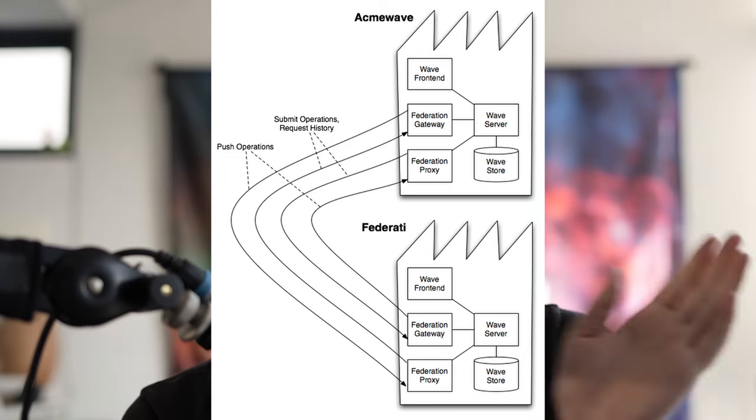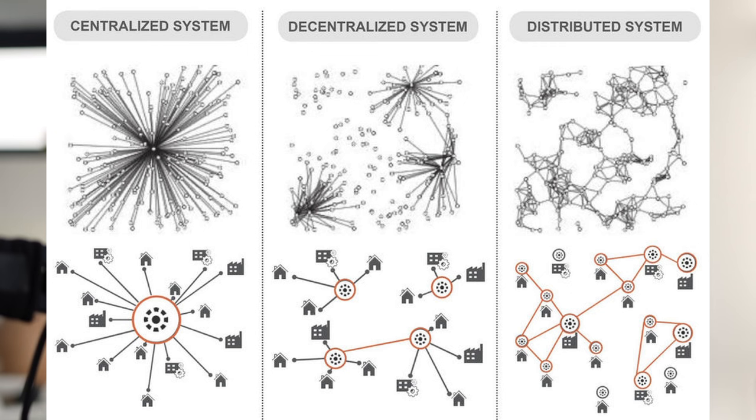Almost all software today is built as fully centralized systems, where there's one company with some computers and all of your data is on their computers. But unfortunately, we ran into problems with Google Wave.